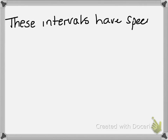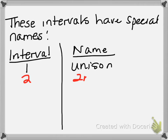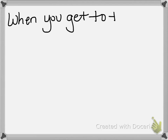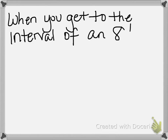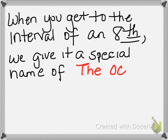These intervals have special names. So we don't just say interval of two or interval of three. An interval of one is called a unison. Interval of two is a second. Interval of three is a third. Interval of four is a fourth. Interval of five is a fifth. Interval of six is a sixth. Interval of seven is a seventh. And what about an interval of eight?